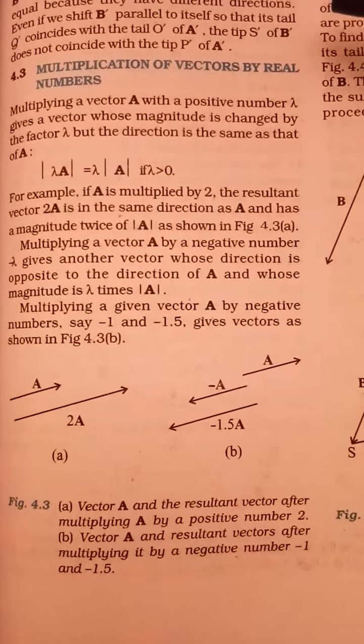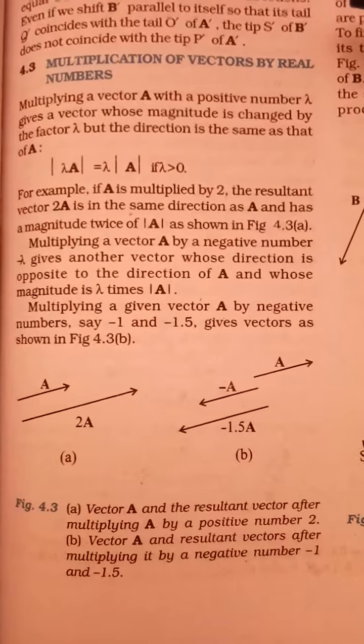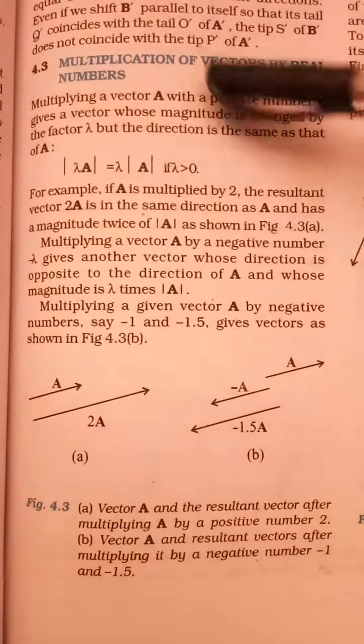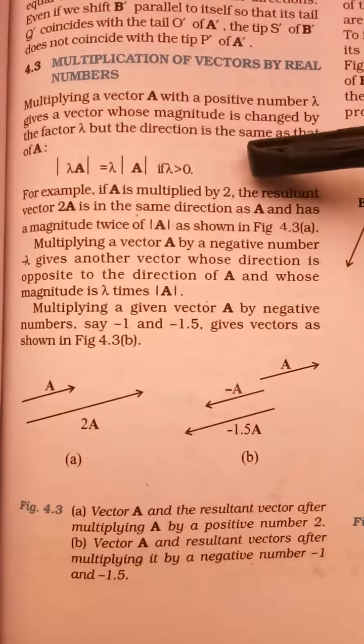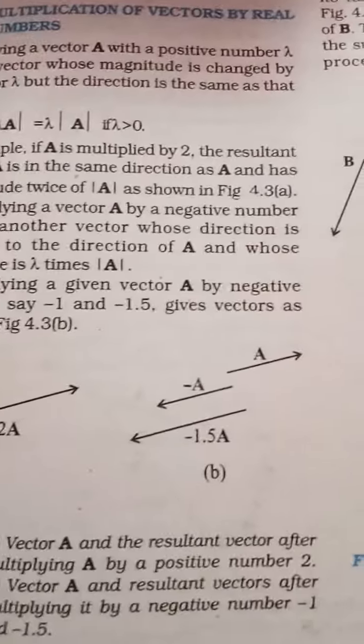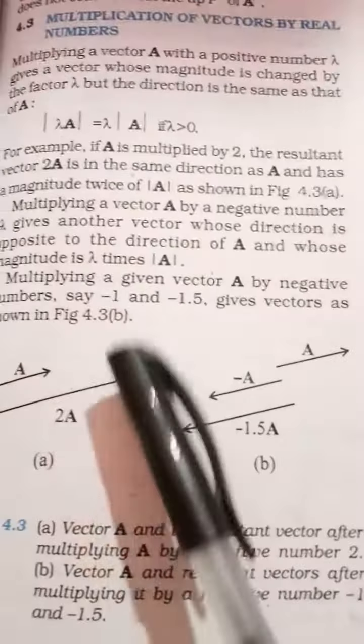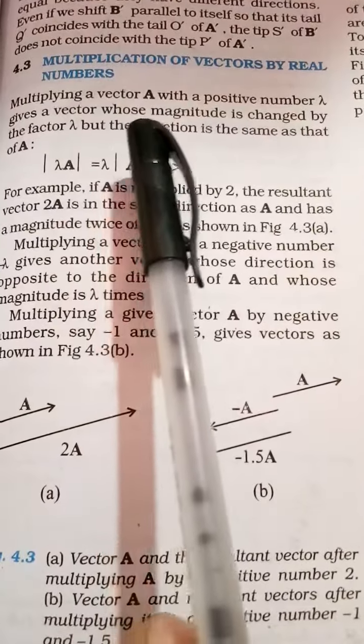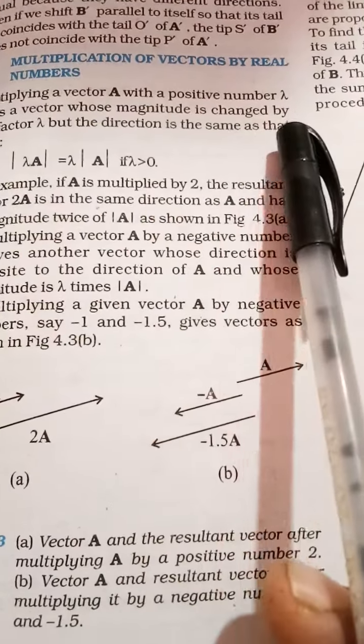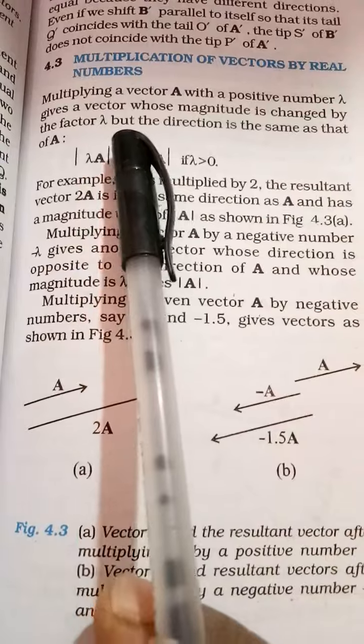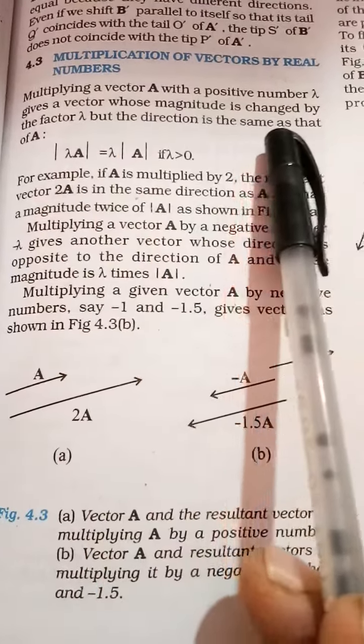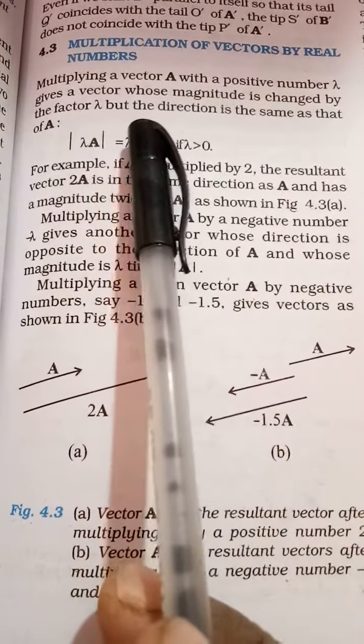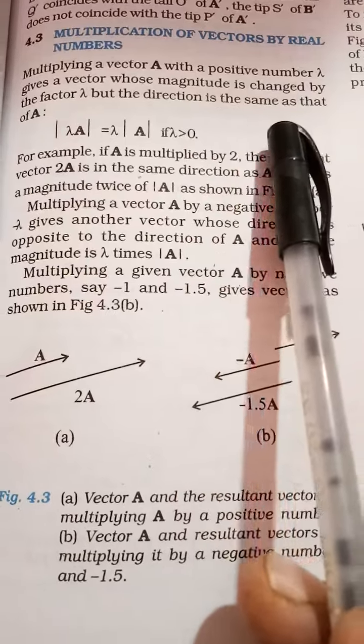We will discuss vector multiplication by real numbers. You will see multiplying a vector A with a positive number lambda. This gives a vector whose magnitude is changed by the factor lambda, but the direction is the same as that of A.